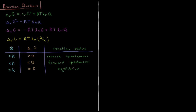Finally, if the reaction quotient equals the equilibrium constant, then Q equals K, giving us K over K, which equals one. The natural log of one is zero, and zero times anything is zero. So our Gibbs energy of reaction equals zero — that is the definition of equilibrium — and the reaction will not proceed spontaneously in either the forward or the reverse direction.